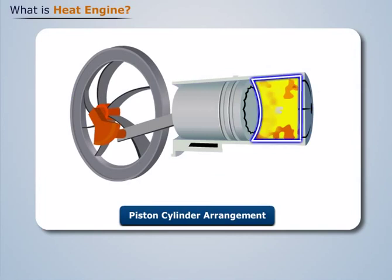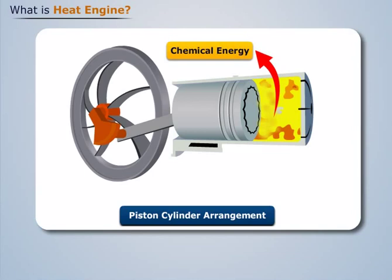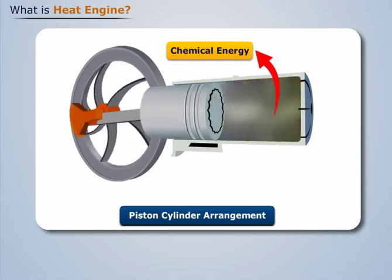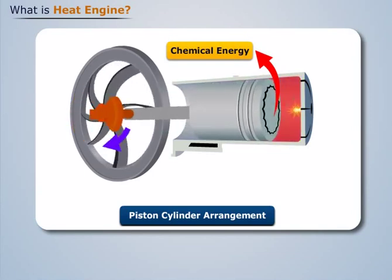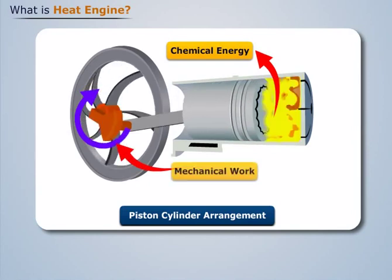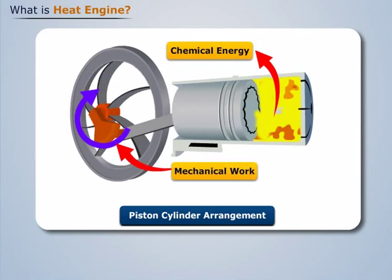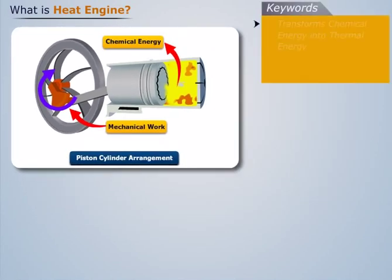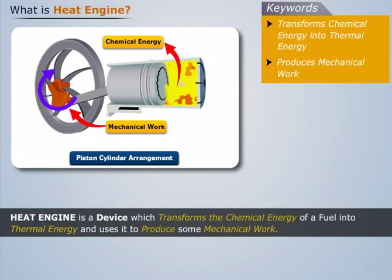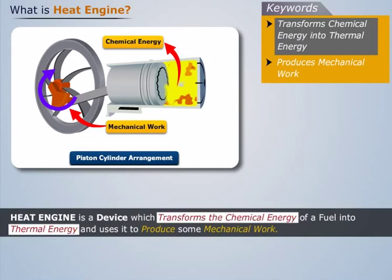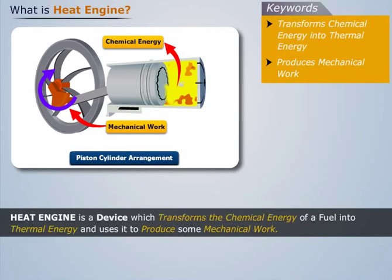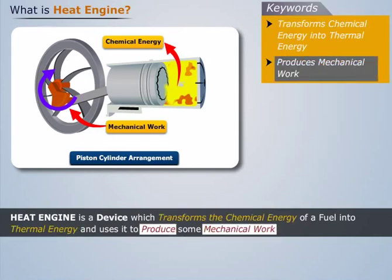Hence we see that this simple piston-cylinder arrangement transformed the chemical energy of the fuel into thermal energy, which then produces mechanical work. Thus we can say that a heat engine is a device which transforms the chemical energy of a fuel into thermal energy and uses it to produce some mechanical work.